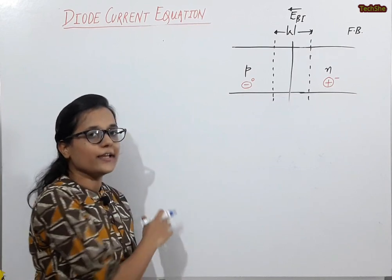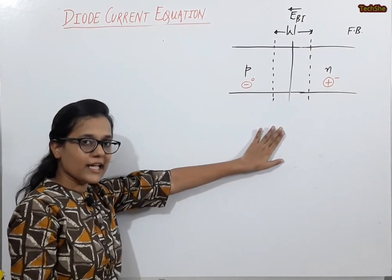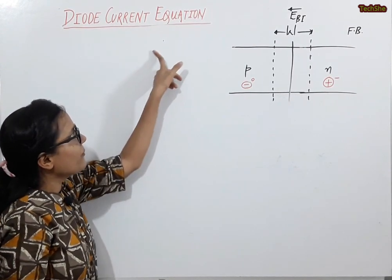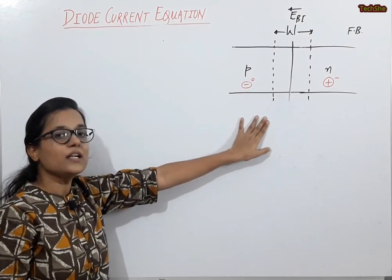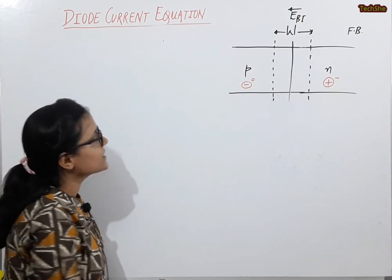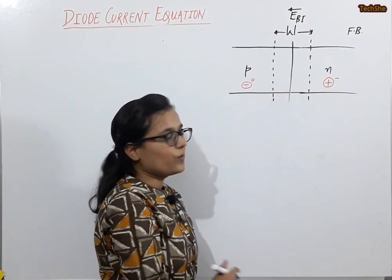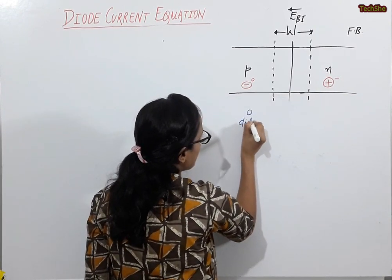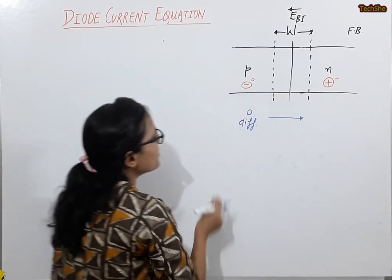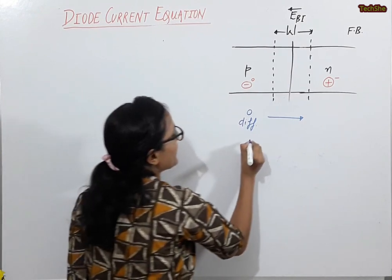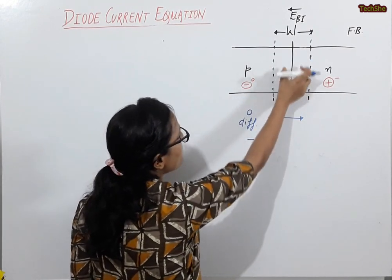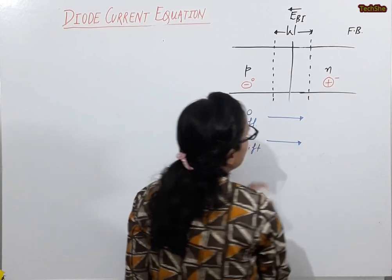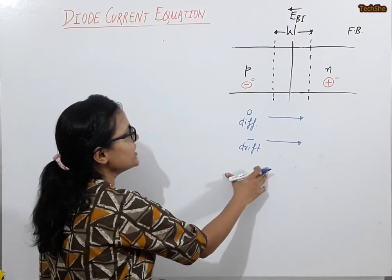I have represented the PN diode in the forward bias condition. The forward bias phenomenon has already been discussed. To find the current, we need to consider the movement of carriers. On the P-side, the majority carriers are holes, which will diffuse from P to N. The minority carriers are electrons, and due to the built-in electric field, their drift movement will be in the direction opposite to the electric field, which is from P to N.